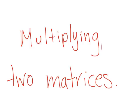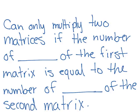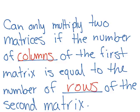Hello, in this video we will learn how to multiply two matrices. You can only multiply two matrices if the number of columns of the first matrix is equal to the number of rows of the second matrix. That is a requirement — it's impossible to multiply two matrices if this requirement is not fulfilled.